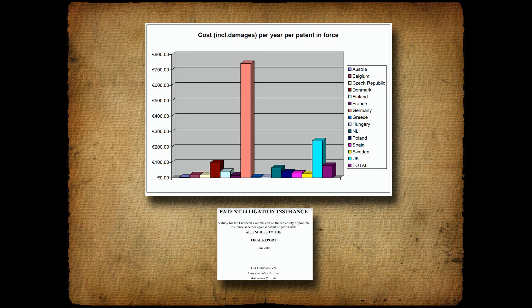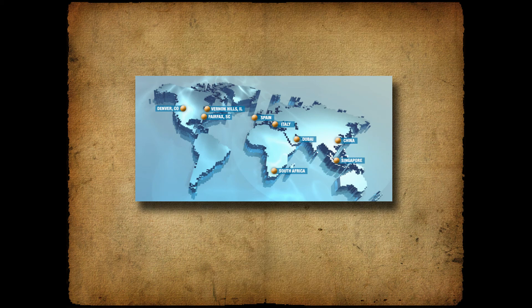Note that most patent statutes worldwide include some version of the make, use, or sell language for infringement. If you own a patent in a country where the product is manufactured, you can get a royalty on the manufacturing done in that country, and by extension get a royalty on all the sales of the product. However, it's important that the country of manufacture has a decent patent enforcement system. If no patent exists in the country of manufacture, then one has to look at sales in countries where patents do exist.